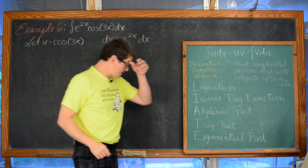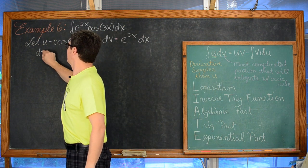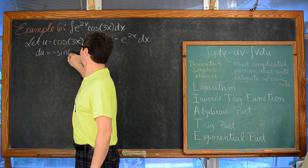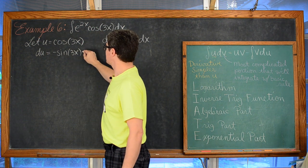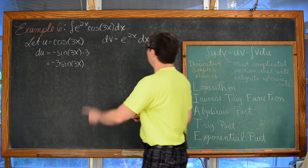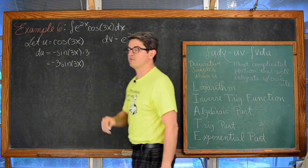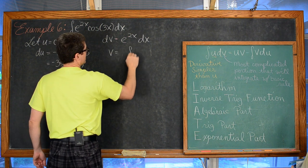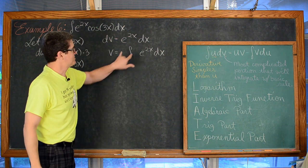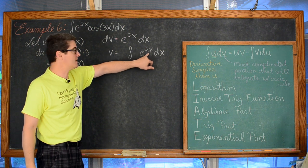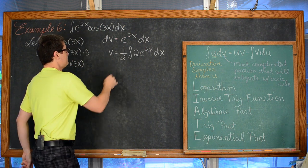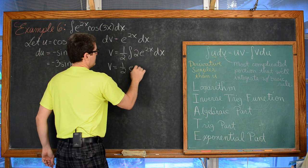The derivative of cosine is negative sine, and with the inside function of 3x we multiply by 3, giving du equals negative 3 sine of 3x dx. To find v, we integrate e to the 2x dx. The derivative of 2x is 2, so we introduce a one-half out front to complete the chain rule, giving v equals one-half e to the 2x. The integral of e to the u is e to the u.